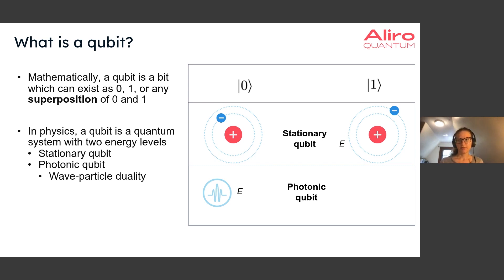In a quantum network, we can think about having two different types of qubits: stationary qubits and photonic qubits. Stationary qubits encode quantum information at the quantum repeaters or at the quantum nodes. They generally stay stationary and don't move around, whereas photonic qubits carry the quantum information between nodes or between repeaters.